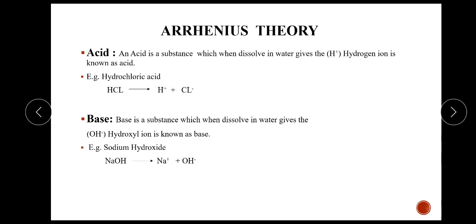Then next is the Arrhenius theory. The concept of acid and base was first presented by Arrhenius in 1884. It is also known as the Arrhenius theory of ionization and the electrolytic dissociation theory. According to the Arrhenius theory, any acid or base on dissolution in water dissociates forming ions and establishes an equilibrium between ionized and unionized molecules. Acid is a substance which, when dissolved in water, gives H+ ions. Example is hydrochloric acid, HCl, which gives H+ and Cl- ions.